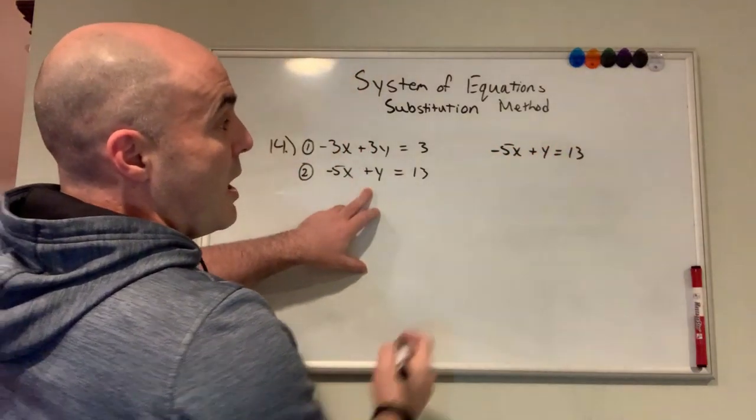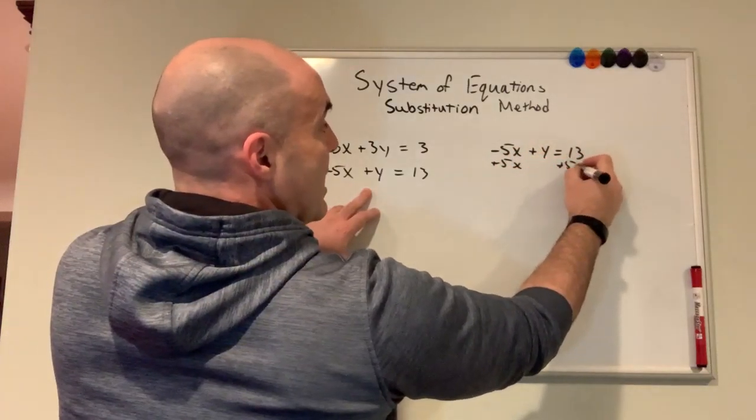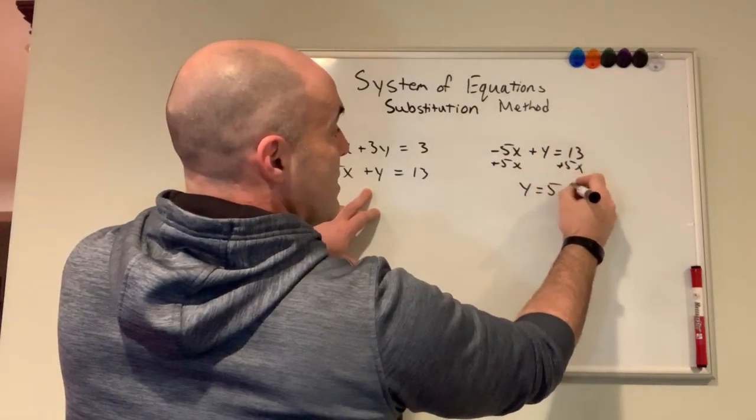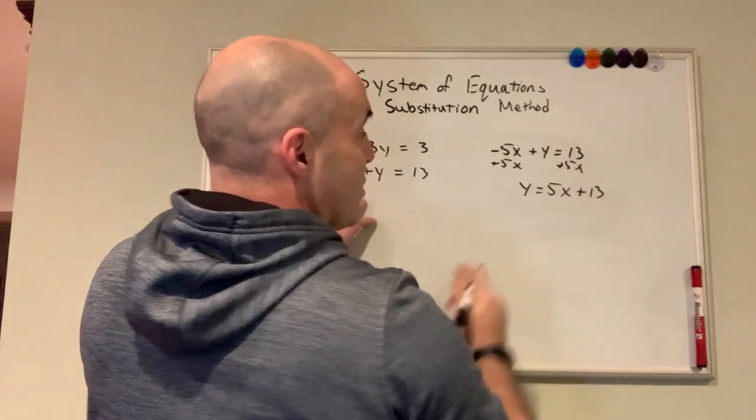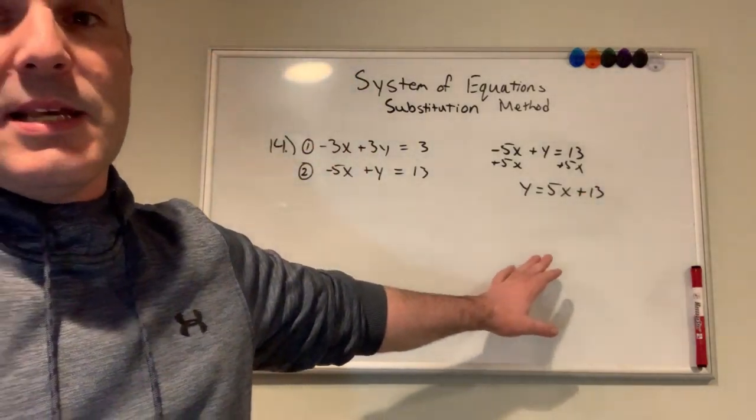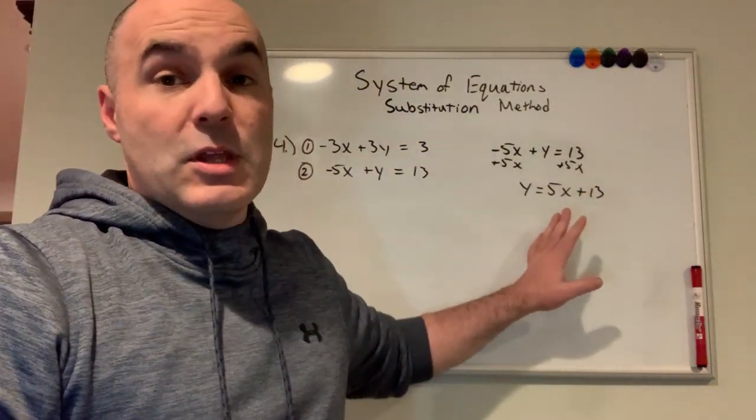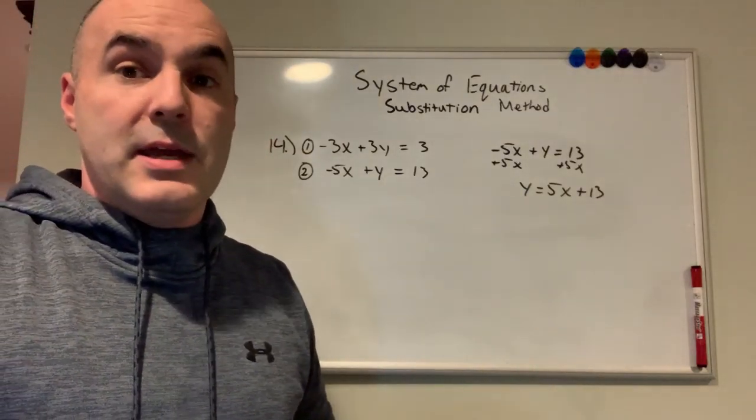And solve for y. So we'll add 5x to both sides. I have y equals 5x plus 13. y is all by itself, set equal to everything else. Even though it's in y equals mx plus b form, we're not graphing it.